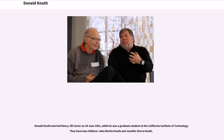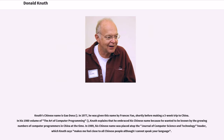Donald Knuth married Nancy Jill Carter on June 24, 1961, while he was a graduate student at the California Institute of Technology. They have two children, John Martin Knuth and Jennifer Sierra Knuth. Knuth's Chinese name is Gao Dena. In 1977, he was given this name by Frances Yao, shortly before making a three-week trip to China. In his 1980 volume of The Art of Computer Programming, Knuth explains that he embraced his Chinese name because he wanted to be known by the growing numbers of computer programmers in China at the time.